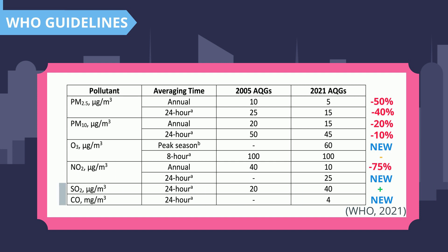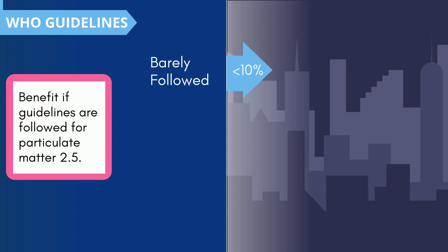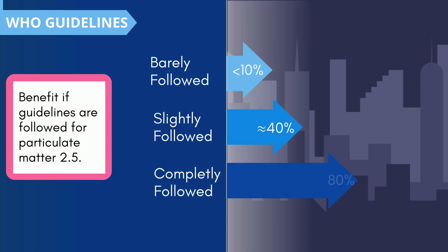When it comes to sulfur dioxide and carbon monoxide, they are considered so detrimental to our health that there are no annual guidelines, but rather only 24-hour guidelines. Sulfur dioxide is the only limit that has increased. For the most deadly gas, carbon monoxide, our air quality has reached a point where we need a 24-hour limit that is only one-tenth of sulfur's limit. The WHO hopes these new guidelines will reduce the enormous health burden attributed to air pollution. It has been estimated that 80% of deaths related to PM2.5 could be avoided if current air pollution levels were reduced to the limits proposed in the updated guidelines.